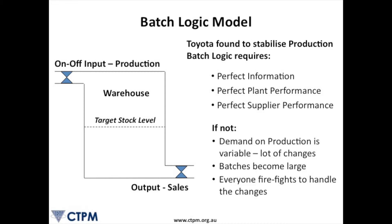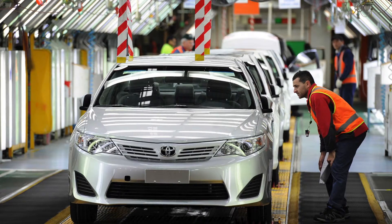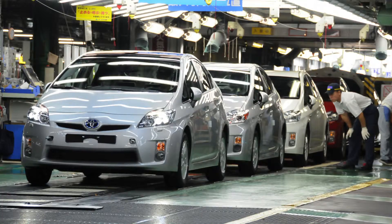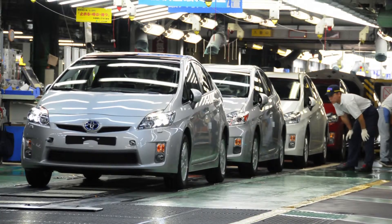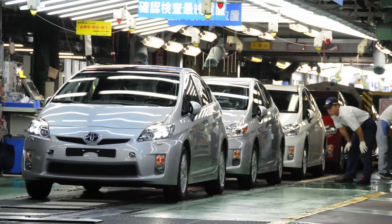Batch logic uses target stock figures to calculate what is required to be produced or delivered. If the underlying data has changed since the last plan was calculated, then one gets a different result and a different plan. Toyota found that batch logic required perfect information, perfect plan performance, and perfect supplier performance — otherwise they were forever adjusting their production plans and schedules.